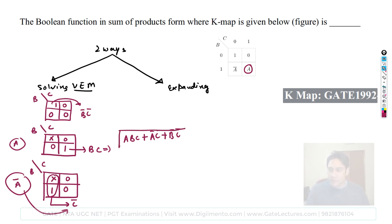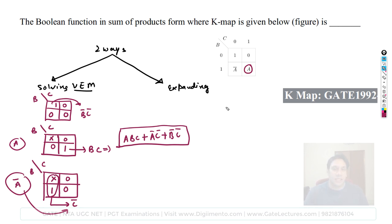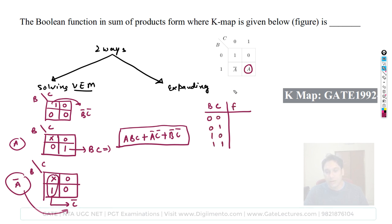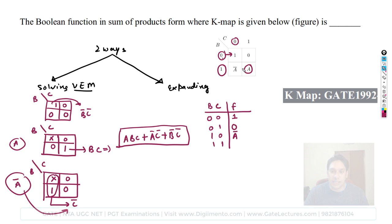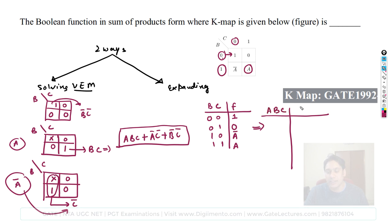Second method: expand via truth table. Variables B, C and function F. When B=0, C=0: F=1. When B=0, C=1: F=0. When B=1, C=0: F=A-complement. When B=1, C=1: F=A. Expanding completely for all variables A, B, C gives the full truth table for the function.